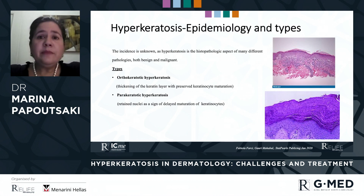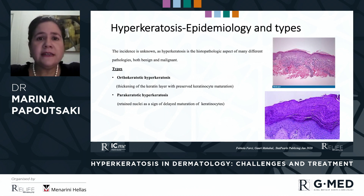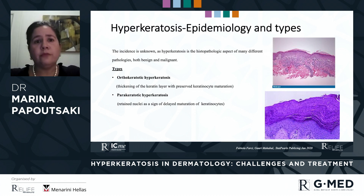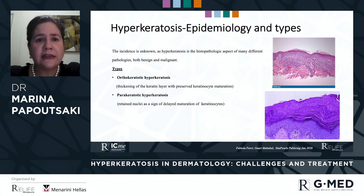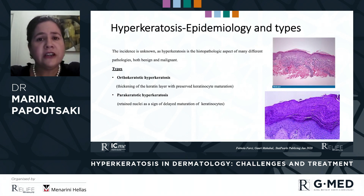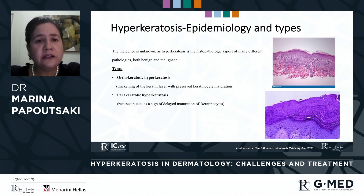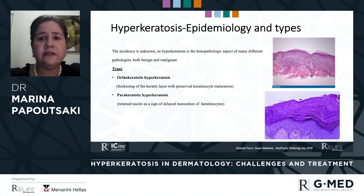Regarding the epidemiology, the incidence is unknown, as hyperkeratosis is the histologic aspect of many different pathologies, both benign or malignant. We can distinguish two types: the orthokeratotic type, characterized by thickening of the keratin layer with preserved keratinocyte maturation, and the parakeratotic type, characterized by retained nuclei as a sign of delayed maturation of keratinocytes.